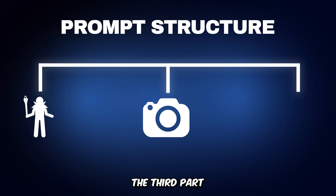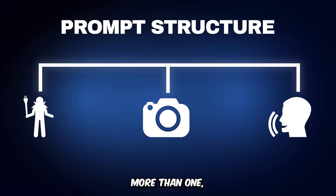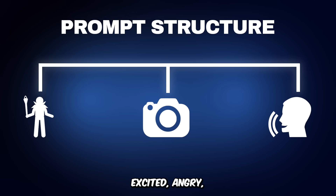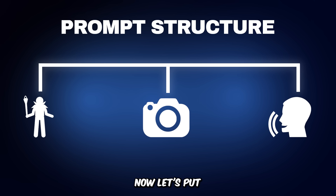Finally, the third part of your prompt focuses on what the character says — or what multiple characters are saying if you've got more than one. Don't forget to include their expressions and tone of voice. Are they excited, angry, nervous, or calm? These emotional cues help bring your characters to life and make the scene feel more real.